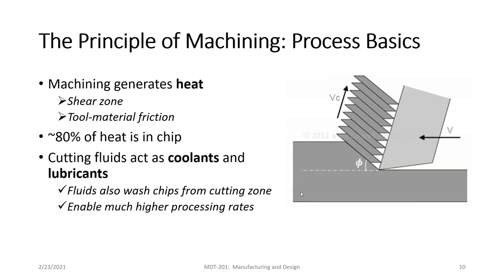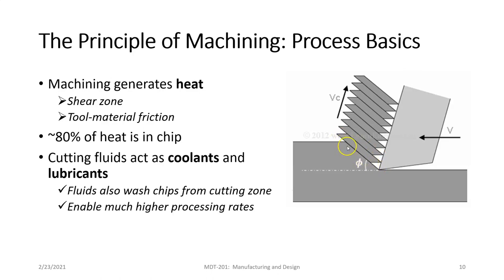Here is another view of that cutting process. We can see the tool here, and V is the velocity — so the tool is moving across, the workpiece is being held, and microscopically what's happening is this shear zone where the material is being cut. This is the chip being formed, and these are called shear zones — this is how the chip is formed and the material is actually cut.